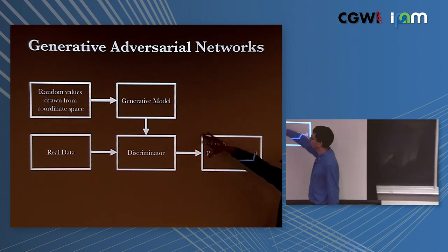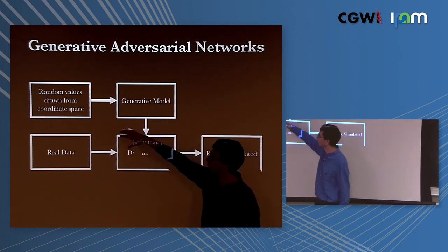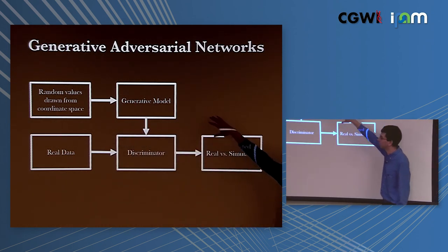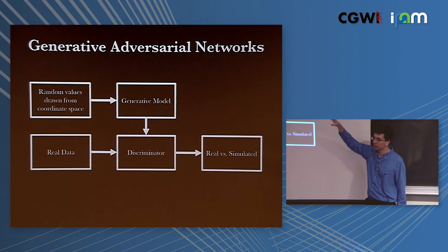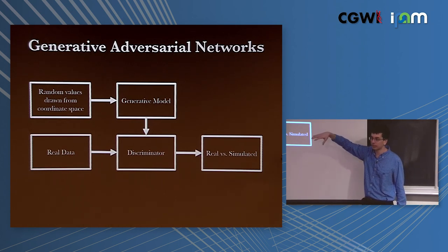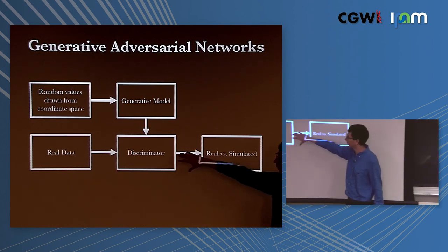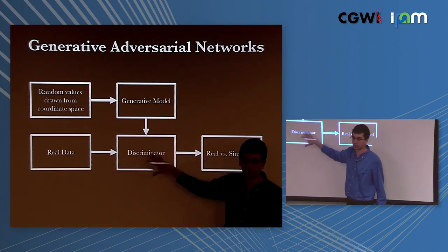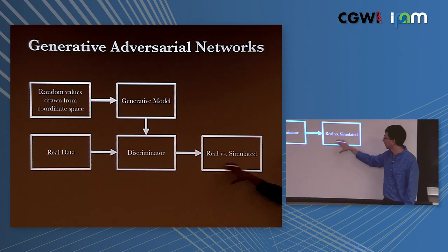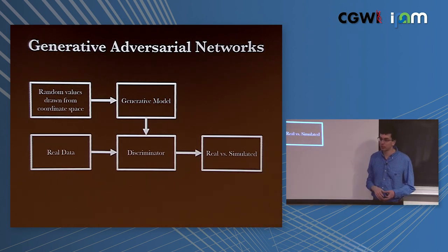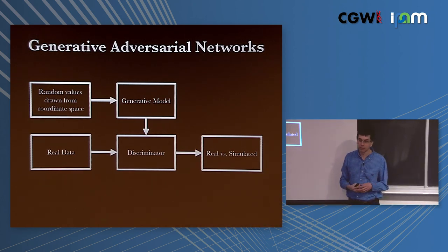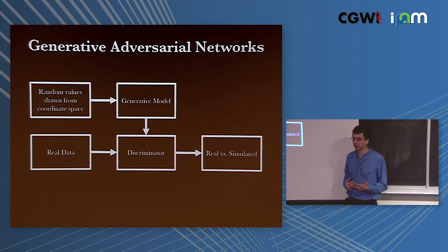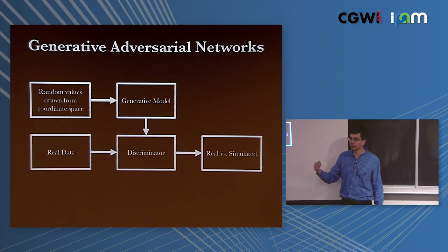We wanted to do it without assuming any certain distribution for the data, and so we used generative adversarial neural networks. You've got two neural networks: you randomly draw values from coordinate space and feed them into one network whose objective is to create samples that fool the second network, a discriminator, which tries to identify if data are real or generated. You train these two things against each other, and ideally your generator produces data indistinguishable from real data.